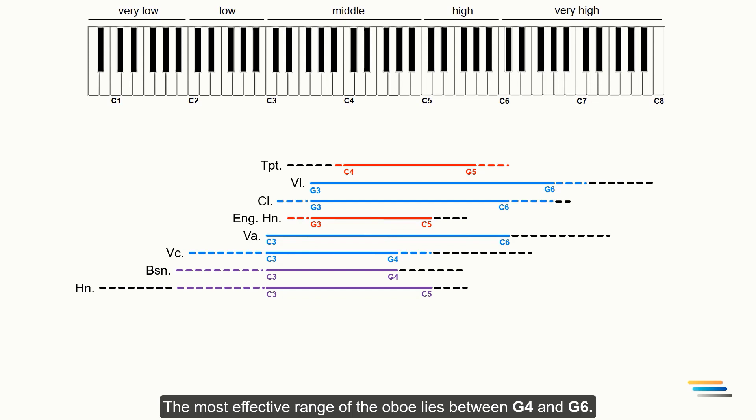The most effective range of the oboe lies between G4 and G6. Black lines should be omitted as they either have poor intonation or are difficult to play. In order to achieve soft sounding in scores, the use of extreme registers of the instruments should be avoided.